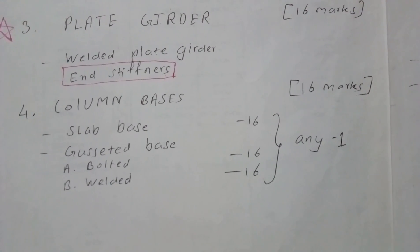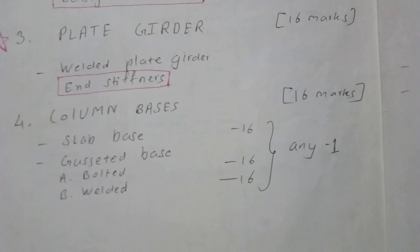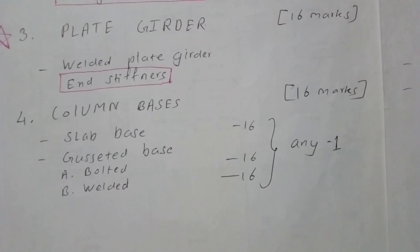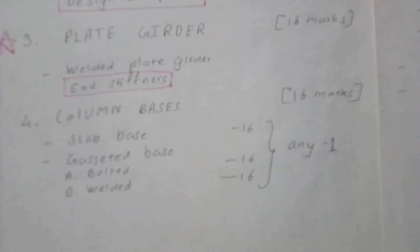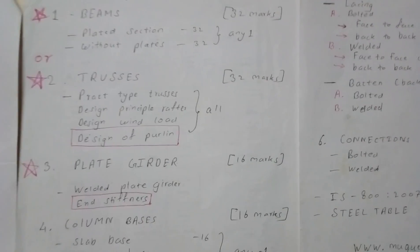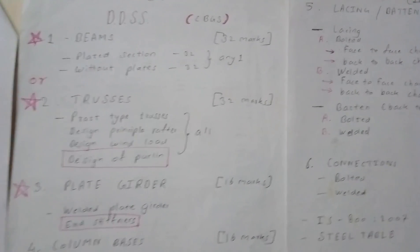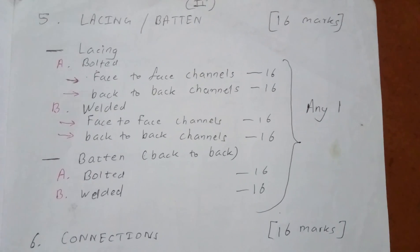We can expect 10 to 12 marks from column bases. If you do this topic, you will score 40+ marks — above 50 percent — which should give a grade point of around 6 to 6.5. That covers the basics for passing. There are more topics in this subject and I'll discuss them too.